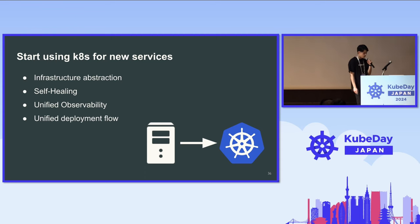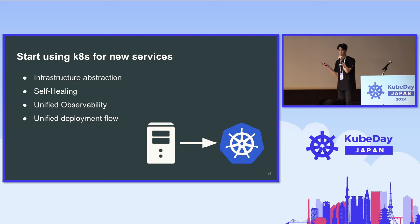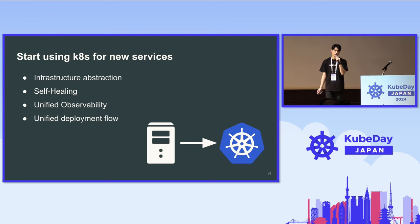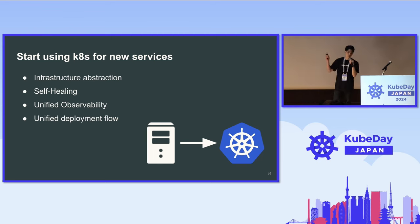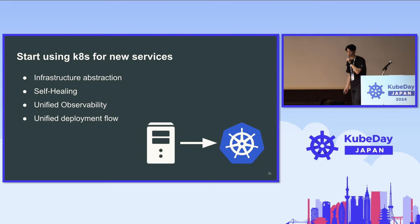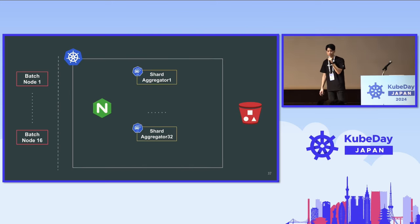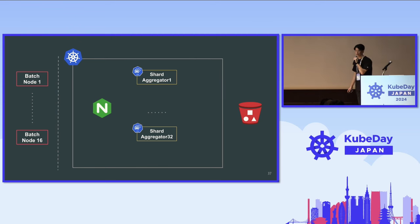Unfortunately, we were in a legacy world where we provisioned physical or virtual machines to deploy all components — we didn't use Kubernetes at all. But we are motivated to migrate all components to Kubernetes for infrastructure abstraction, self-healing, unified observability, and unified deployment flow. As a starting point, we went with Kubernetes for the new components. The writing architecture now has a Kubernetes cluster with NGINX as the L7 load balancer and shard aggregator.